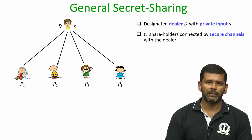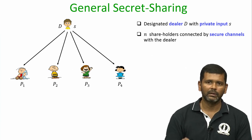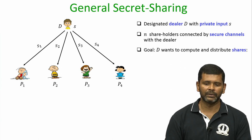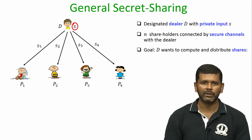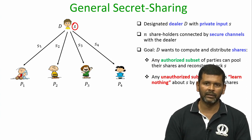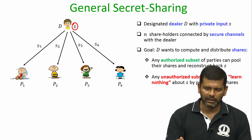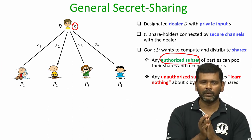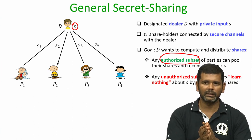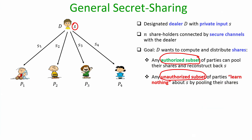Let us recall the problem of general secret sharing. You have a designated dealer with some private input, and the dealer is connected with individual shareholders by secure channels. There is some value S which the dealer wants to share among n shareholders — it wants to compute shares and distribute them to respective shareholders such that the privacy and correctness properties are satisfied. Correctness means any authorized subset of parties who pool their shares should be able to reconstruct the secret S, but any unauthorized subset should fail to learn the secret even with unbounded computing power.